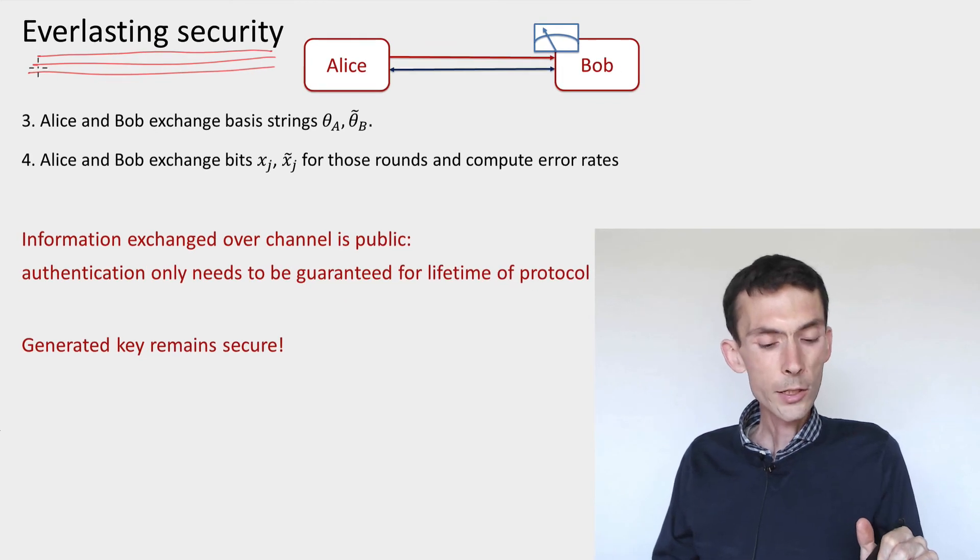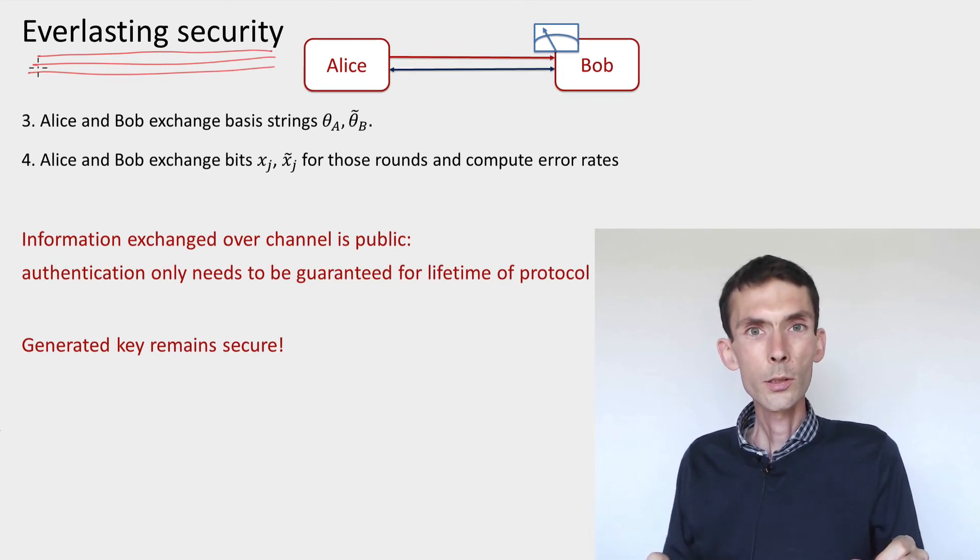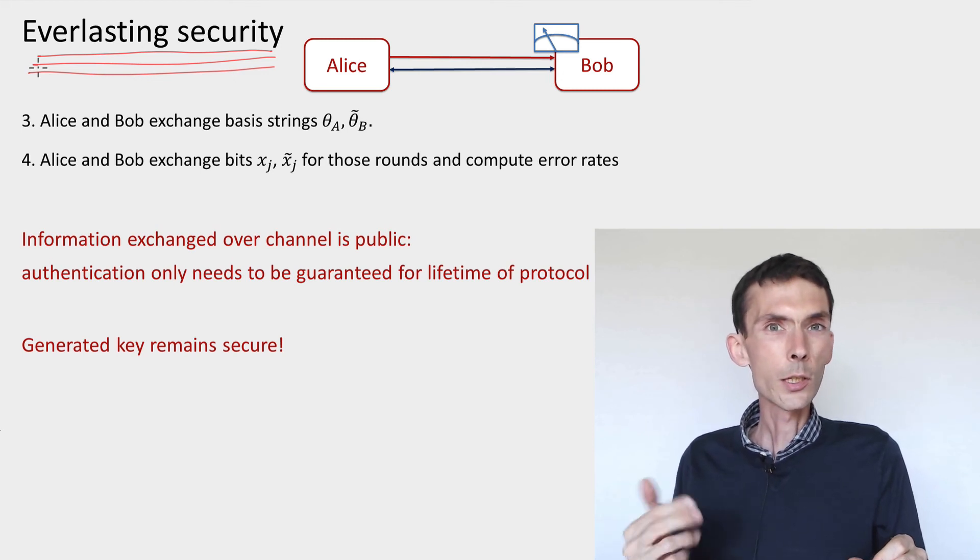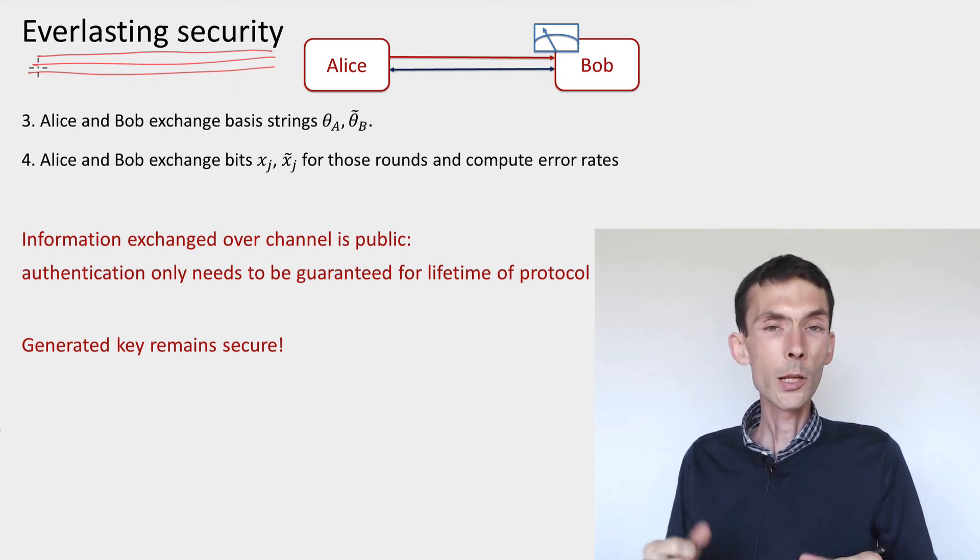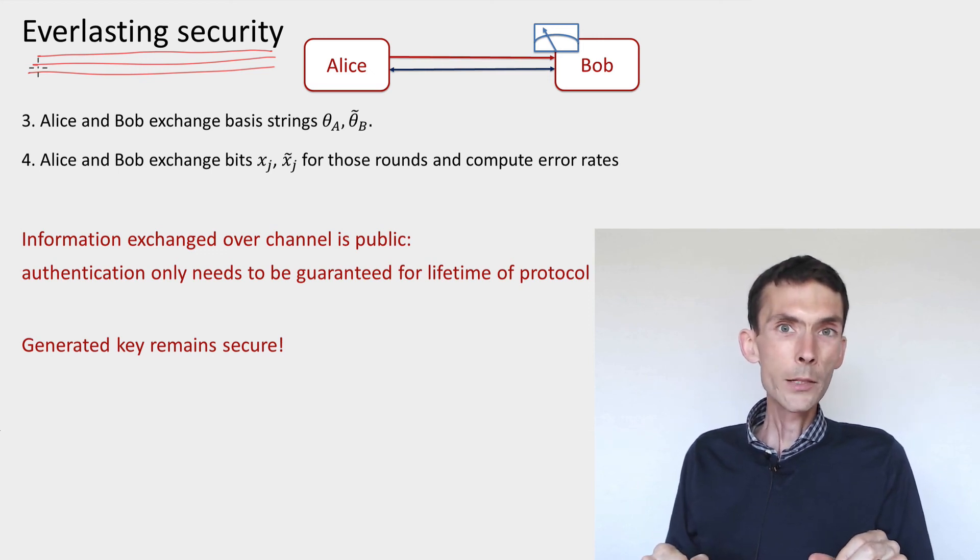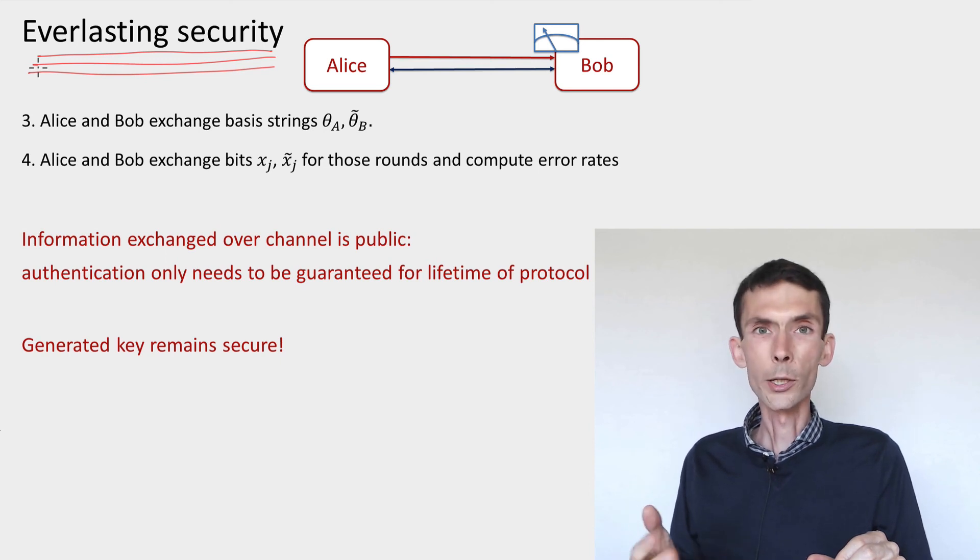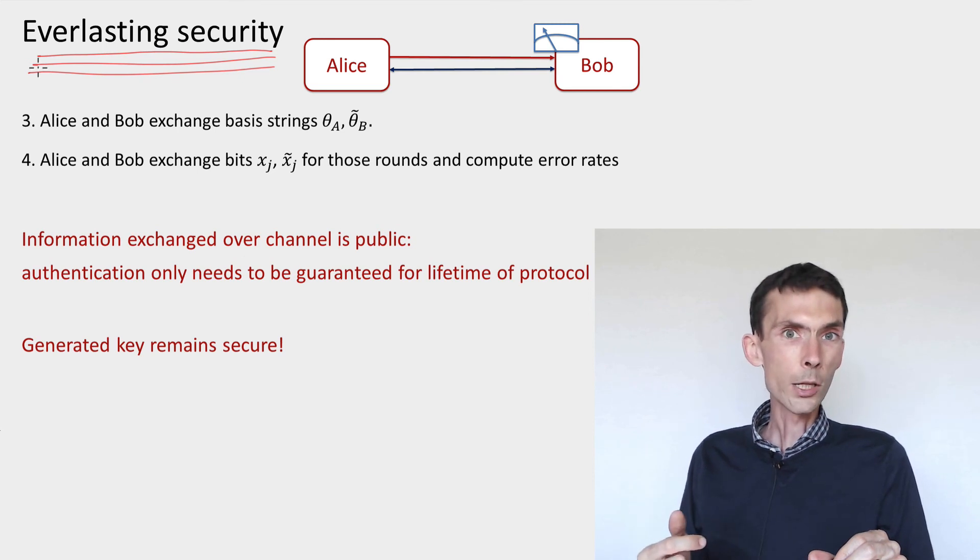The argument is that the bits of key that are produced in the BB84 protocol have this property called everlasting security. And what everlasting security means is that once the key has been produced, even if the authenticated channel that was used in the process of coming up with these bits is broken, even if its security is later compromised, the bits of key that have been obtained at the end of the protocol are still secure. Why is this the case? Well, because if an adversary breaks the authentication channel sometime after the protocol has been executed, then what is the adversary going to do with that information? Anyways, we already assumed that anything that was exchanged in the authenticated channel was public. So the adversary has access to it. So if it is able to break the authenticated channel in the time that the protocol is being executed, then that's a problem. But if it breaks it later on, then that's not a problem at all.